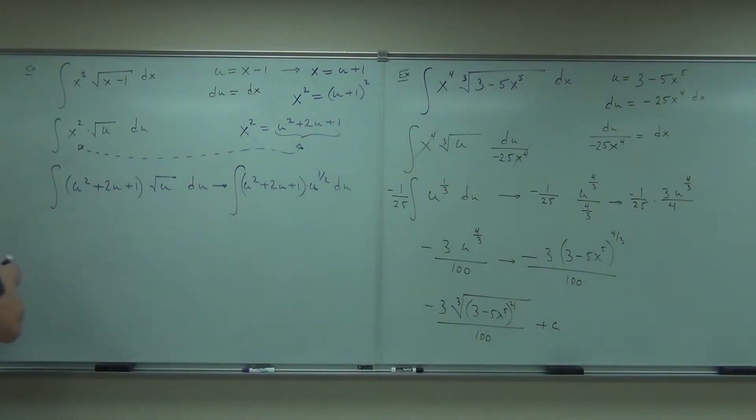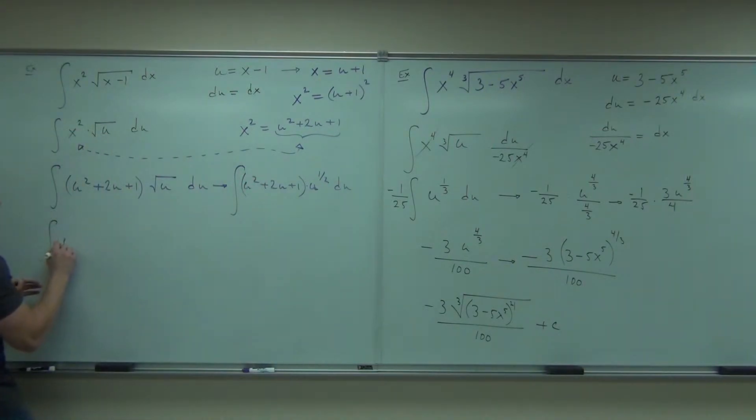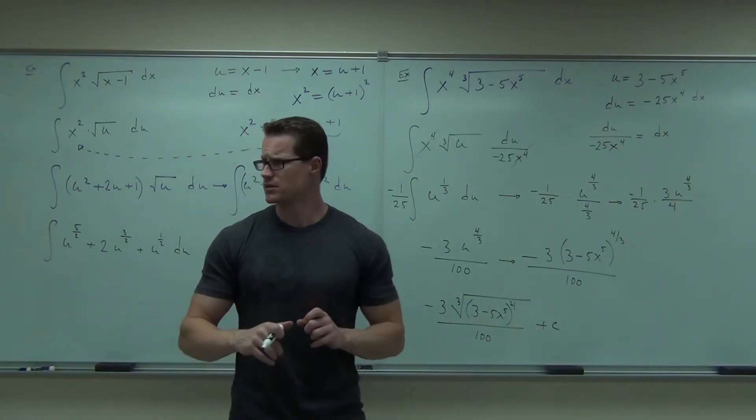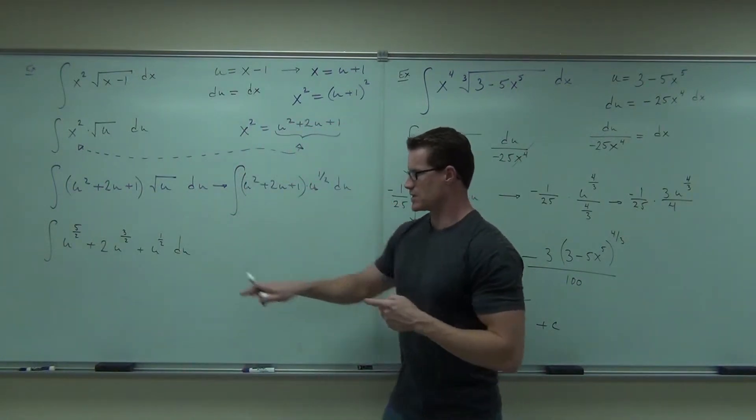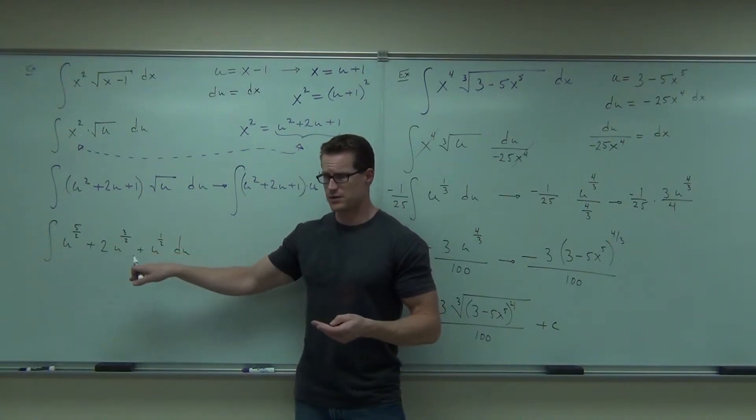When we do, recall that you add exponents when you multiply. So, this is going to be u to the 5 halves. This will be 2u to the 3 halves plus u to the 1 half du. Did I do my math right on that? Can you take an integral of that one? Very easily. Each one of those fits.